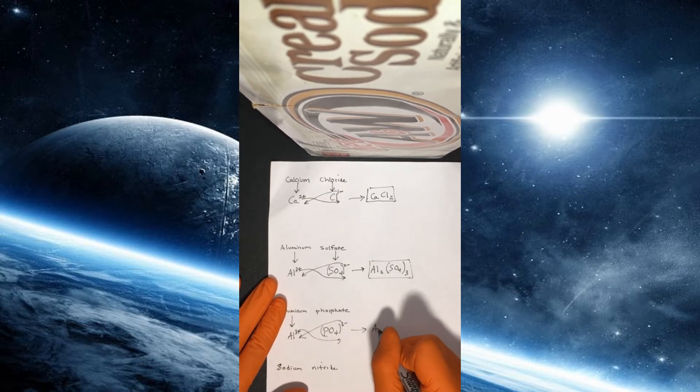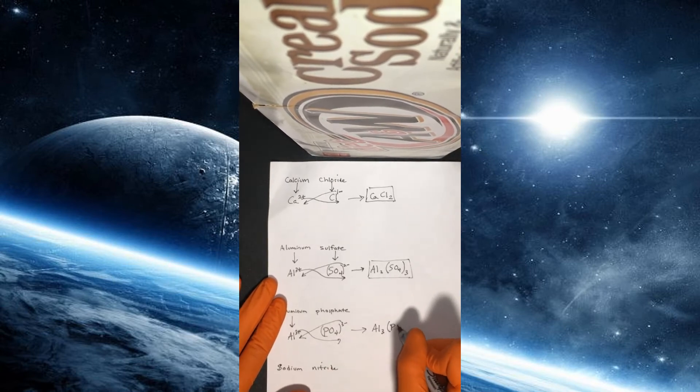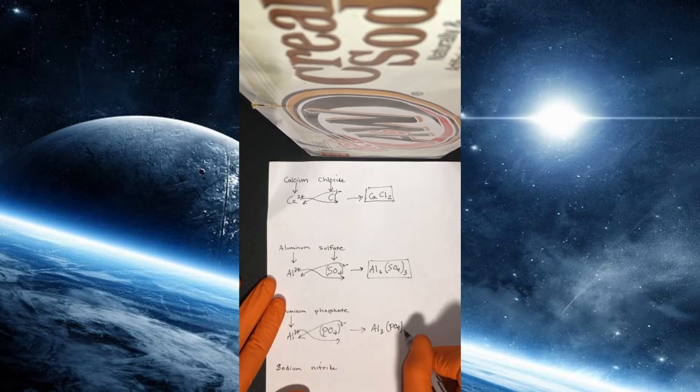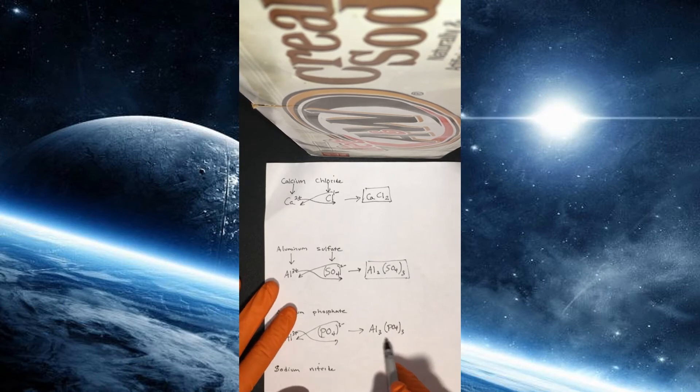And so I write my aluminum. Now this 3 comes down here. And then I need to make sure to keep that phosphate because it's polyatomic in parentheses. This 3 comes down here. But unfortunately, this is not the final answer. This is not the correct answer.